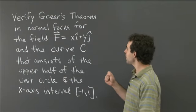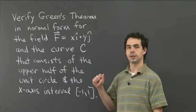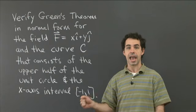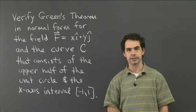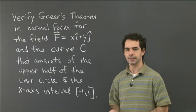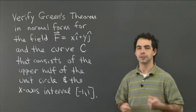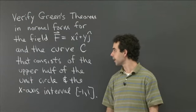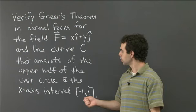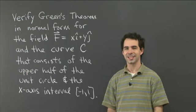What I mean by verifying Green's theorem is: compute both the double integral that appears in Green's theorem and the line integral that appears in Green's theorem, and check that they're equal to each other. That will confirm Green's theorem in this particular instance and hopefully give us a feel for how it works. So pause the video, have a go, compute both of those integrals, and come back and we can work them out together.